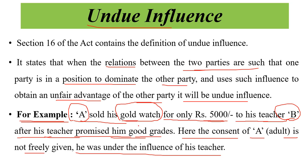Undue influence can exist between parents and children, or between a doctor and a patient. For example, a doctor may say that if you don't take the tablets you won't recover, so the patient is under the influence of the doctor and has to take medicines. One party is dominating the other for their own benefit.